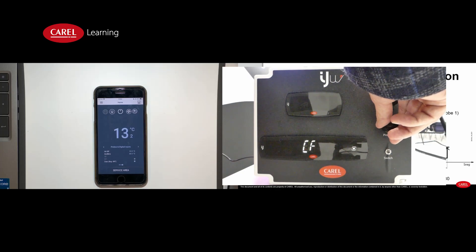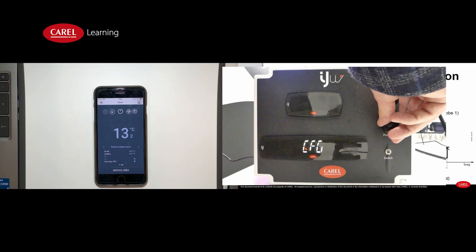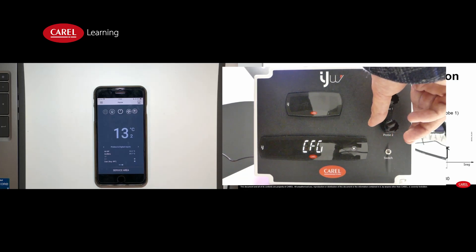So let's increase for example the temperature to a value higher than 30 degrees. We increase slowly. Okay, so we stop at 33 degrees. Now 35.